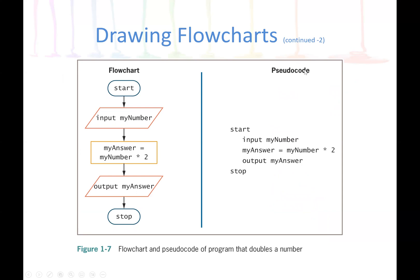Let's look at the previous example again. In the flowchart, we start with the oval symbol 'start'. We use a parallelogram for input — 'input myNumber'. A rectangle is our process: 'myAnswer = myNumber * 2'. Then our output, also a parallelogram. The arrows go downward, which means execution starts from the top all the way down.